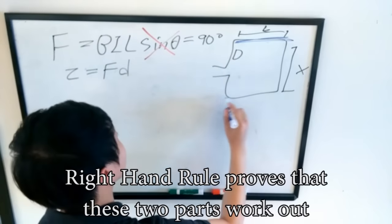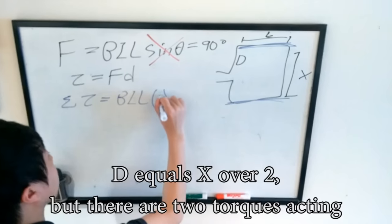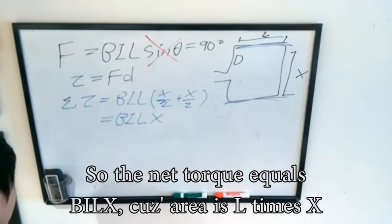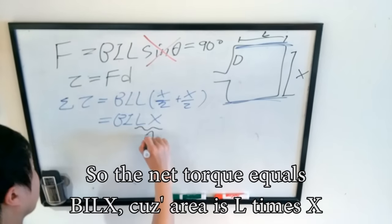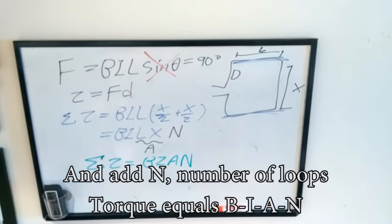Right-hand rule proves that these two parts work out. D equals X over 2, but there are two torques acting, so the net torque equals B I L X. Because area is L times X, and at the number of loops, torque equals B, I, A, N.